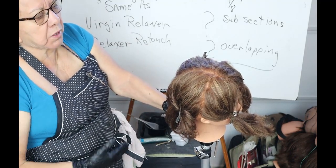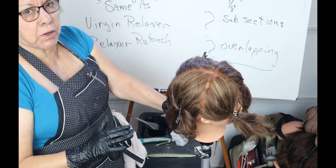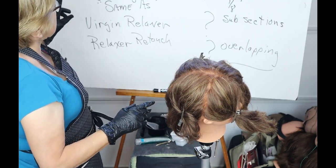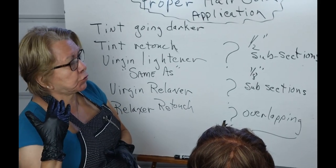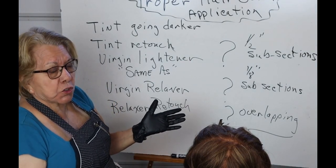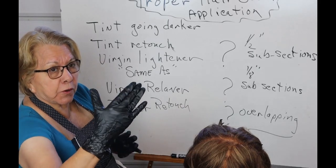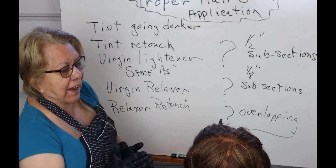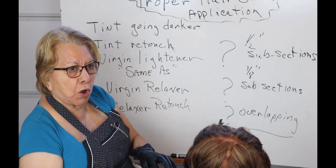Once you're experienced, many times we don't section — it depends on the color and what we're doing. There is a procedure for tint going darker. A tint is a hair color from dark blonde to black. You also have lighter tints, which are dark blonde through very light blonde or even the platinums. All of those are called tones of color.